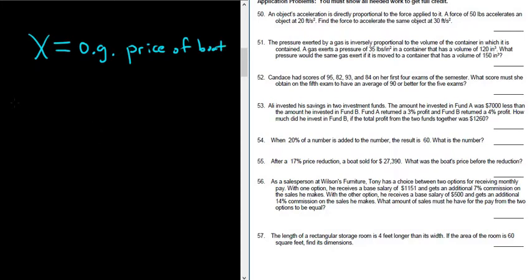So the boat sold for $27,390, and that should be equal to what it sold after the reduction. It sells for the original price minus 17% of the original price. So it sold for a 17% price reduction, and we're told that that amount is $27,390.